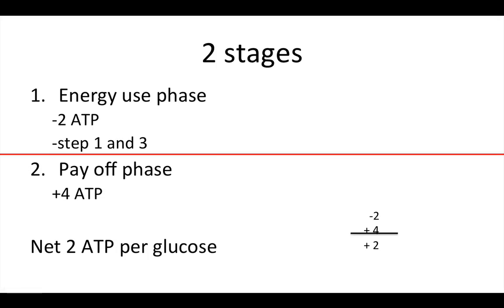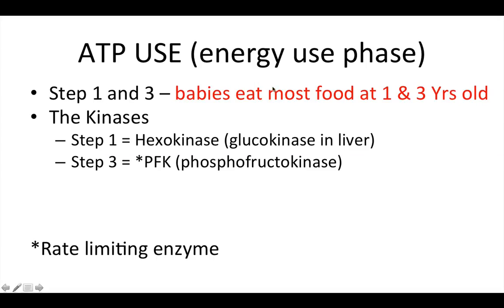We can break glycolysis into two main stages: the energy use phase and the payoff phase. In the energy use phase, we use two ATP — that's in steps one and three. In the payoff phase, we get four ATP. So we gain four but use two, giving us a net plus two ATP per glucose.